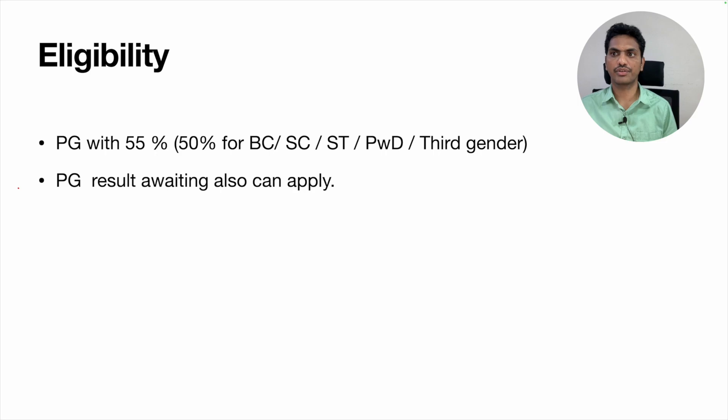Or else if your result is awaiting, if you did not get your result - final year semester result - then also you can appear for this exam. Provisionally you are allowed to attempt the exam even though your final year result is awaiting. You can apply but you will get the certificate only after the result, only when you submit the provisional certificate that you got the required percentage in your postgraduation, then only you will get the AP SET certificate.